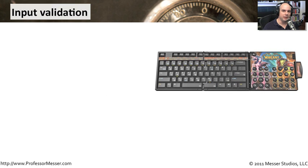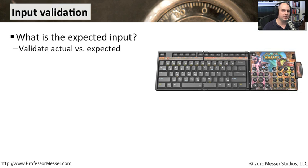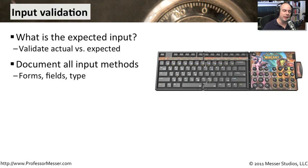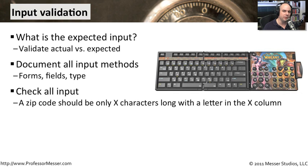A very common development process is one where we validate the input that is going into our systems. We determine what the expected input might be and compare it with what we get. If we're asking someone for a name, an address, or maybe a serial number, there's probably an exact string or set of strings we might expect. We want to check the data to make sure it's exactly what we were expecting. We should go through our entire application, document every possible input method, look at forms, look at fields, and look at the types of information we're putting in there.